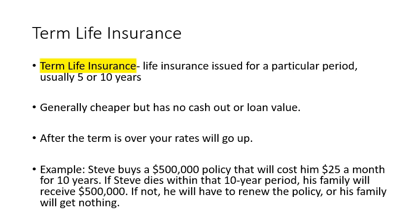Here's an example: Steve buys a $500,000 policy costing him $25 a month for ten years. During that ten-year period, if Steve dies, his family — or whoever he names as beneficiary — is going to get the $500,000. If he doesn't die during that ten-year period, he'll have to renew that policy, and the $25 a month he pays is probably going to go up.